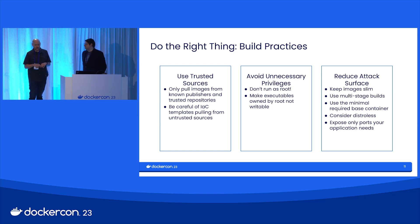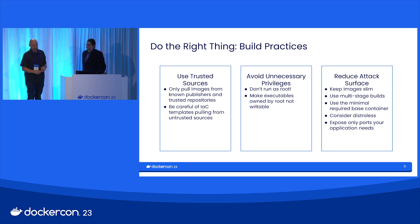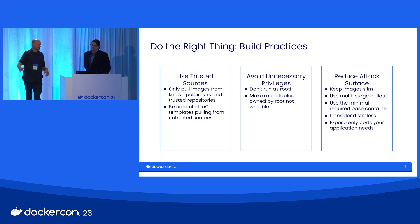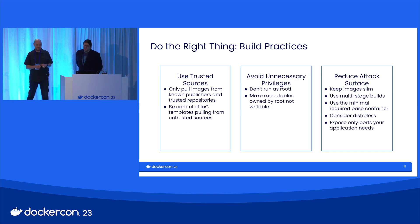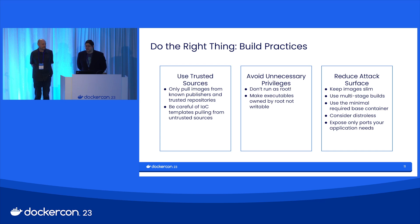Let's talk about build practices. Use trusted sources — we want to get images from known publishers, from trusted repositories, things like Docker Hub that has certified publishers being scanned. I was listening to a customer call this week where one of their guys had a Helm chart with a line that said go pull this image that bypassed all of the security scanning. What's the distribution of the image? Is it a random Ubuntu image, a UBI image, or something from a commercial entity like Chainguard? There are a number of ways to handle this to drastically limit the attack surface.